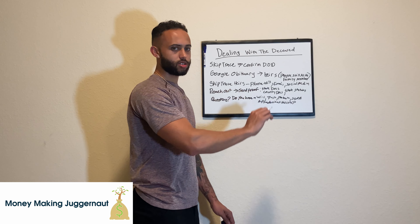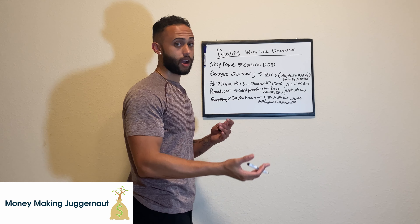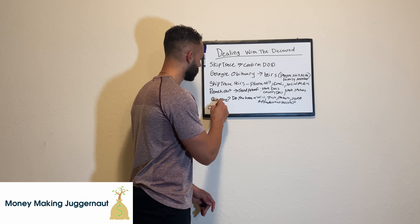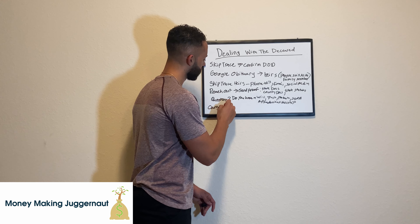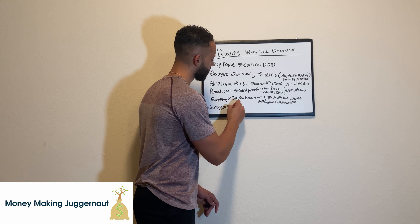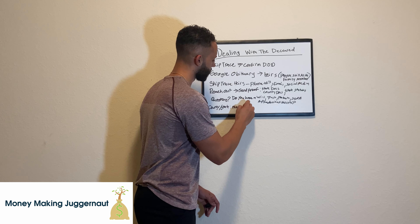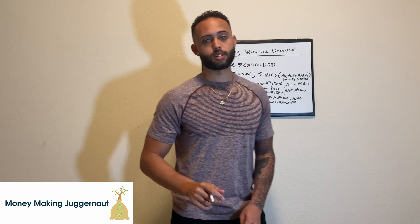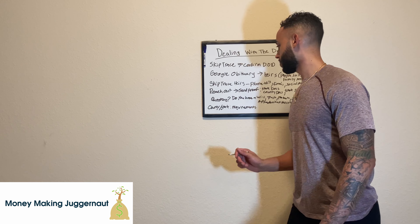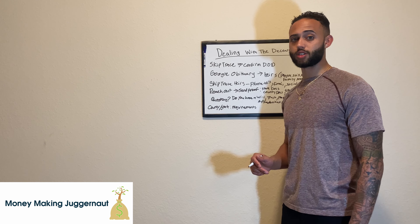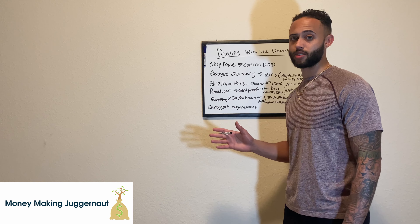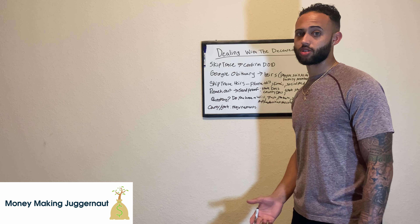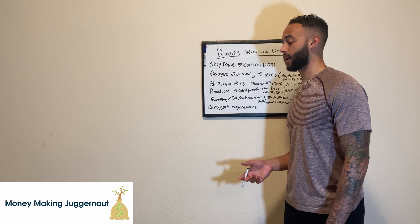After you ask them all these questions and figure out how you're going to go after the claim, you need to contact the county or the state and get their requirements. The deceased individual may have multiple heirs equally entitled to these funds. What you need to do is call the county, call the state.